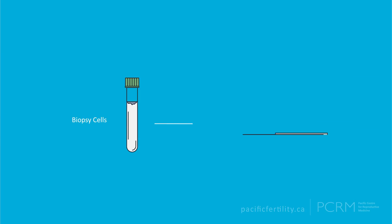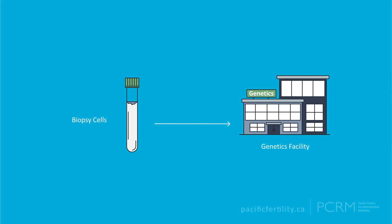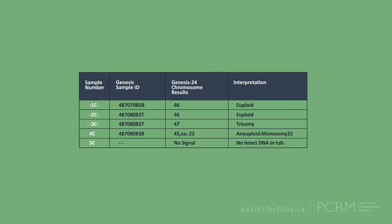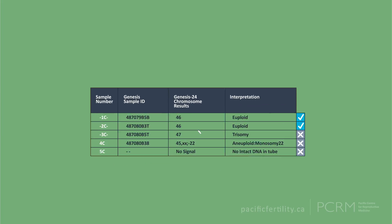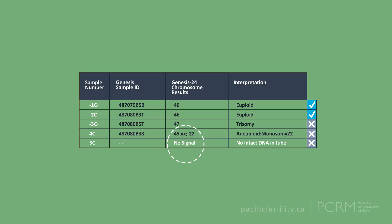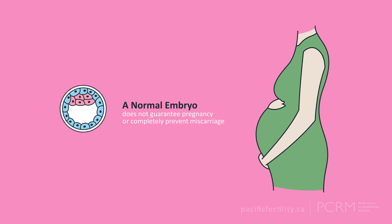The biopsy cells are sent to a genetics facility that analyzes the DNA to determine if the embryo contains the normal 46 chromosomes. This allows for the transfer of a chromosomally normal embryo, which will have a potentially higher chance of implantation than an untested embryo. It's important to note that PGTA increases cost by $4,000 or more, and there's a small chance that the genetic test may return with no result. Even a chromosomally normal embryo does not guarantee pregnancy, nor does it completely prevent miscarriage.